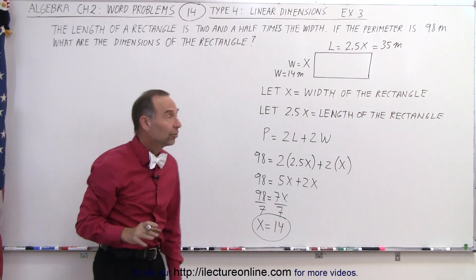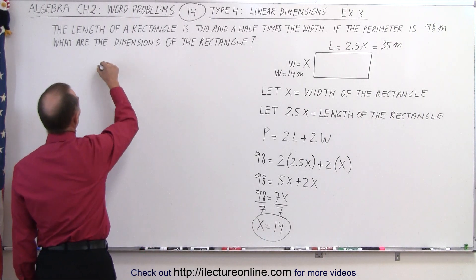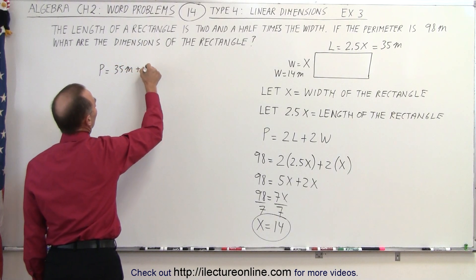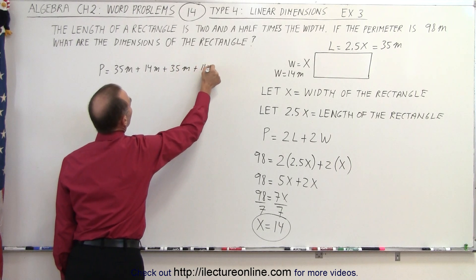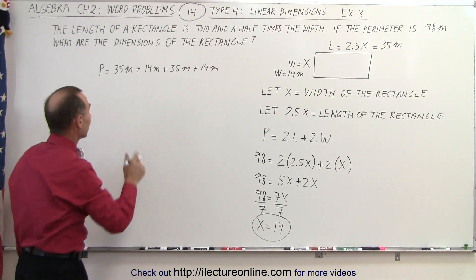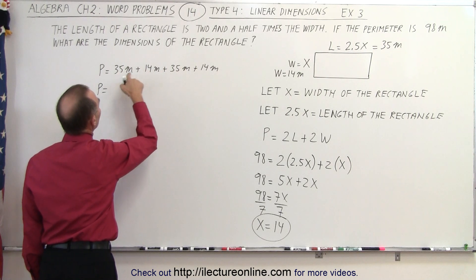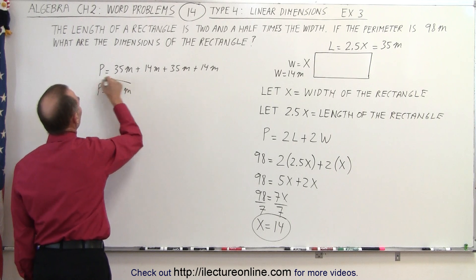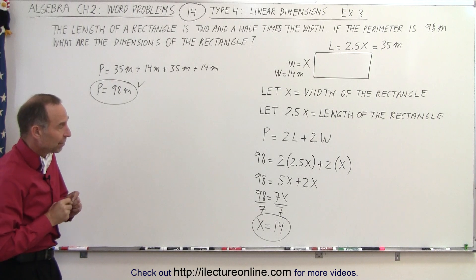And now we can check, because if we add all the widths and the lengths together, it should add up to 98 meters. So the perimeter should be equal to 35 meters plus 14 meters plus 35 meters plus 14 meters. Notice we have the length, the width, the length, and the width. All that together should add up to 98. See, perimeter is equal to 35 plus 35 is 70, 14 plus 14 is 28, 70 plus 28 is 98 meters. And that does indeed check with the original problem, and so we found the correct dimensions of the rectangle.